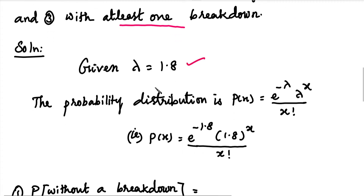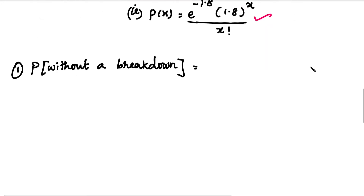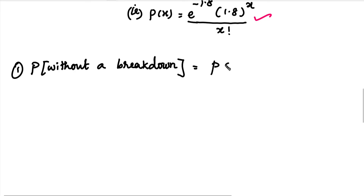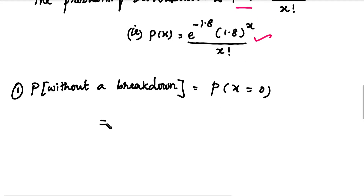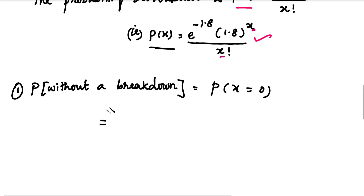Let's use the mean value of 1.8. This is the mean value. For the Poisson distribution, P of X equals 0. Let's substitute the value. Next, let's solve the first part — what is the probability of no breakdown? That is P(X=0). In this step, we will substitute X=0. Let's substitute P(X=0).